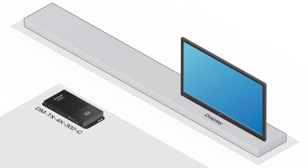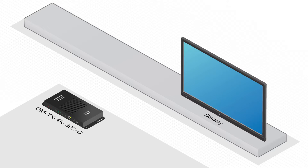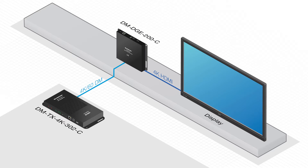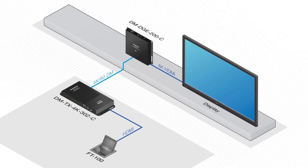Start as you normally would by installing a DM transmitter. Here we'll use the DMTX 4K302C under the table. Take the 4K60DM output from the transmitter to the 4K60DM input on the DMDGE200. You could stop there, but let's add a flip-top in the table as a pass-through device to manage the cables. It provides a more professional and polished installation.